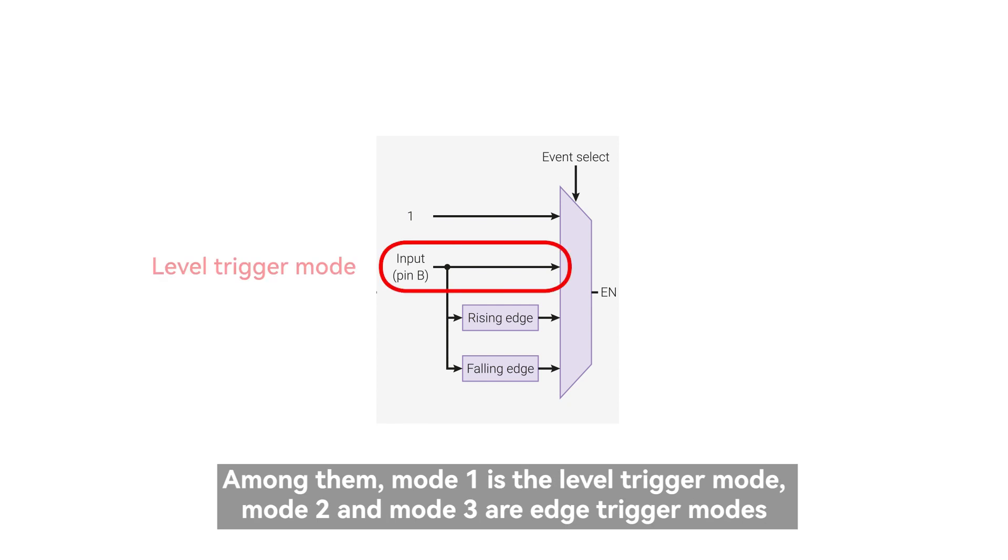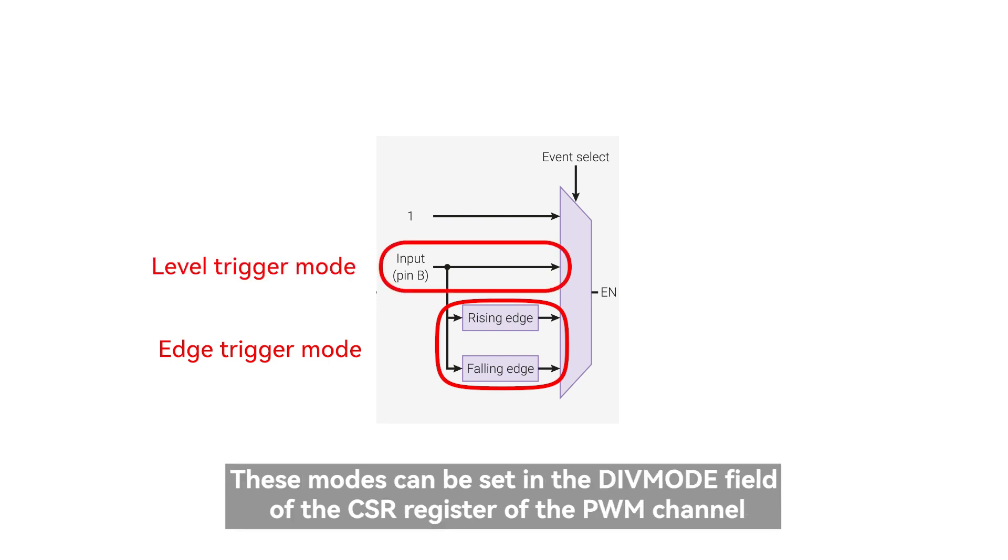Among them, mode 1 is the level trigger mode, mode 2 and mode 3 are edge trigger modes. These modes can be set in the div mode field of the CSR register of the PWM channel.